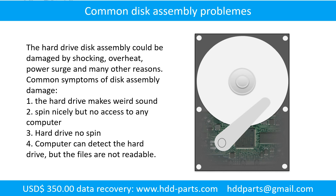If the hard drive disk assembly is damaged, we can do disk data recovery to recover the data from the disks. The common symptoms of hard drive disk assembly failure are: hard drive makes weird sound, spins nicely but no access to any computer, or hard drive does not spin. Tip: if the storage is configured as mirrored hard drives, you can take the bad hard drive out, then put a same size or bigger hard drive into the bay, and the storage will mirror the data to the new hard drive automatically. If this trick doesn't work, that means both mirrored hard drives are damaged, or the storage was configured as RAID 0.